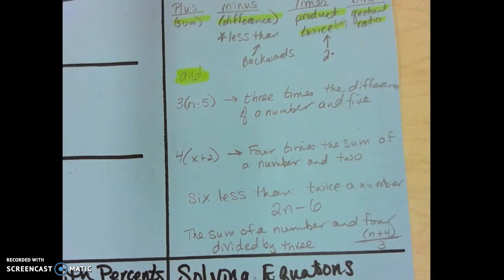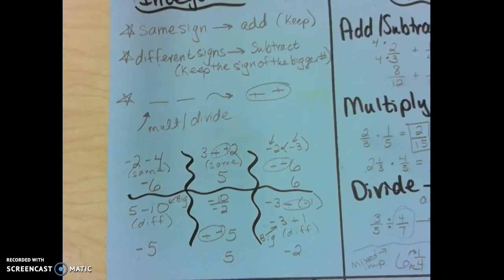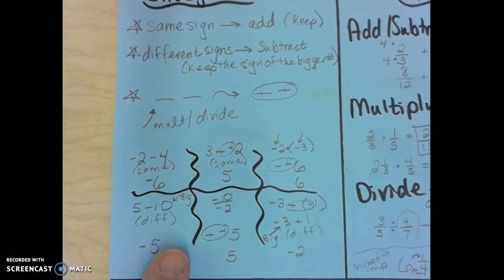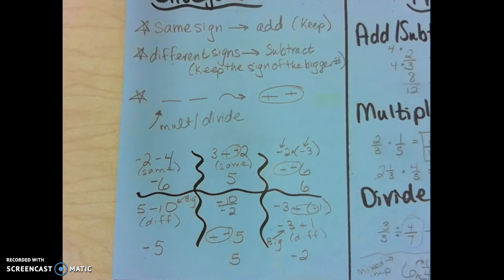So make sure you know which word means what. Only use the word and for sum, difference, product, quotient, and ratio. Don't use the word is, because that creates an equal sign. And just try and remember all your vocabulary. And then study your integer rules. Don't take it for granted. This should be an easy part for all of you to do really well on.